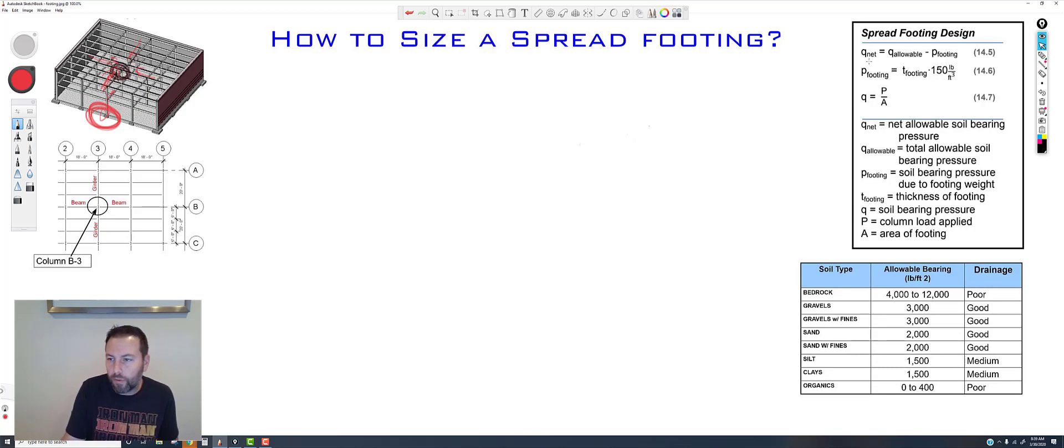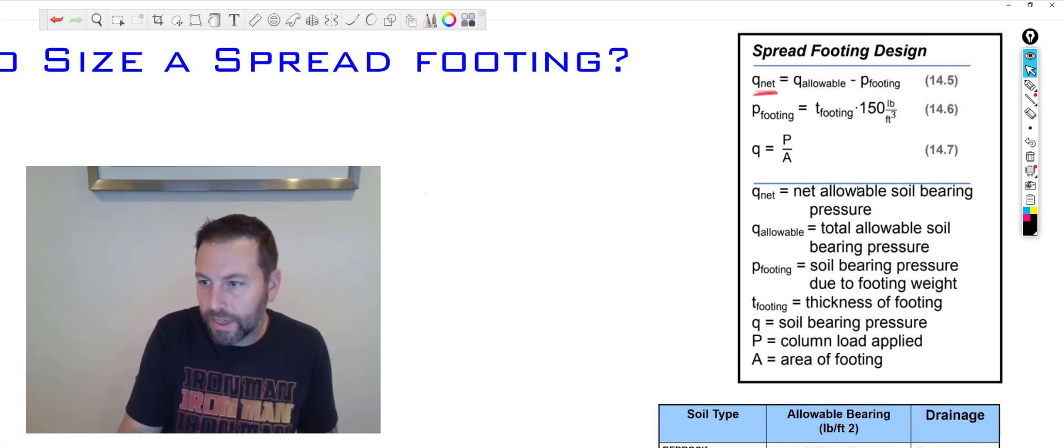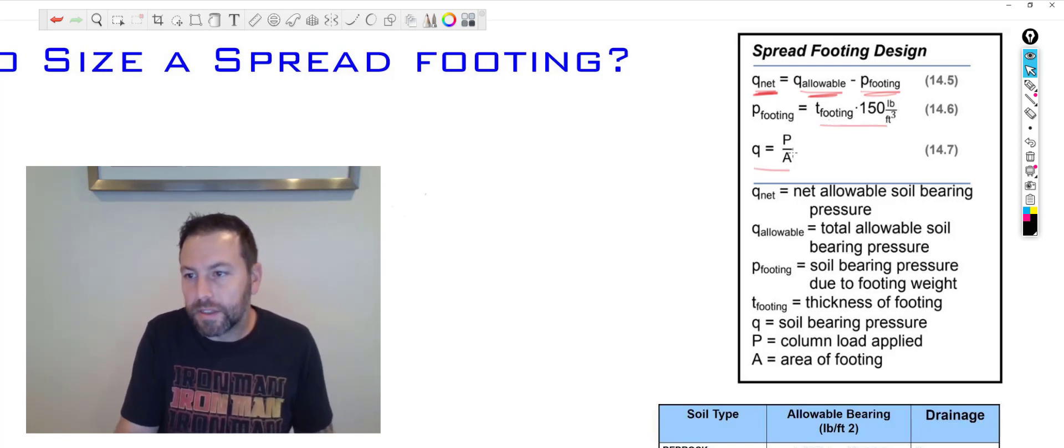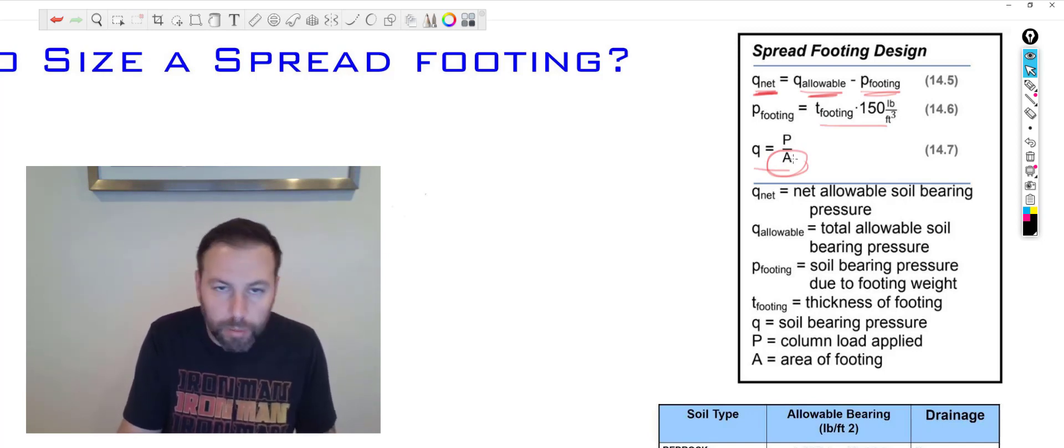What we have is in our formula sheet, we have a couple of things. We have Q net, which is the net allowable soil bearing pressure, which I'm going to tell you where that's going to be coming from. Q allowable minus the P footing. And then we can actually use this formula to find the pressure of the footing right here, and then ultimately this to see what the area is going to be of the footing, and then pretty much come up with a shape from there.